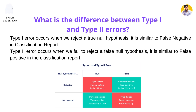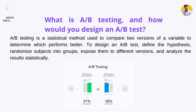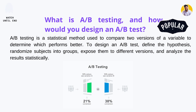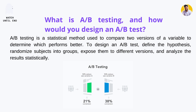Our next interview question is: what is AB testing and how do you design an AB test? AB testing is a statistical method used to compare two versions of a variable to determine which is better. To design an AB test, we first define the hypothesis, then randomize the subjects into groups, expose them to different versions, and analyze the results simultaneously. For example, if you build two different designs of a website and want to know which design gets more customer clicks or visitations, this is where you can apply AB testing.